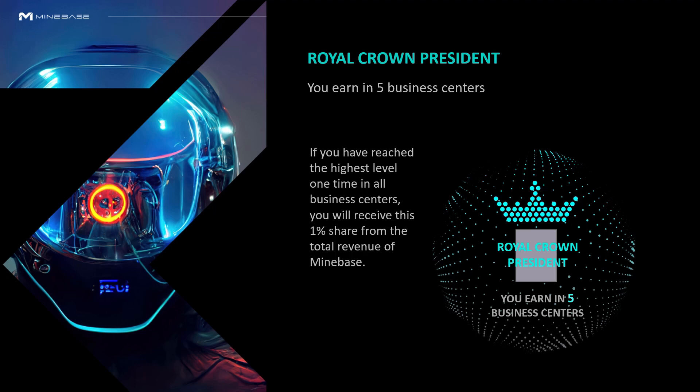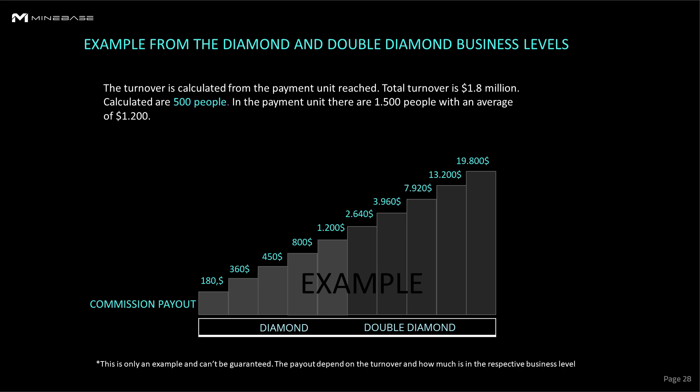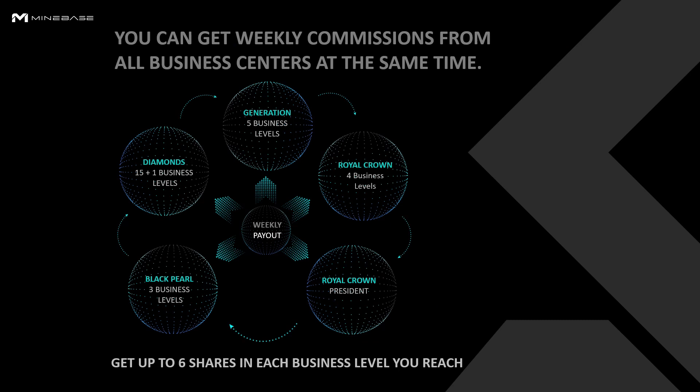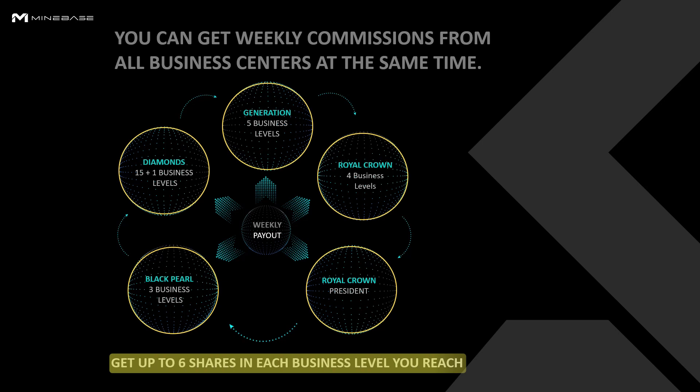Let's see how it looks in the first two Diamond levels and what you could earn there. Here is an example — note that this commission depends on how many partners are in which level. You can get a weekly commission from all business centers at the same time, and get up to 6 shares in each business level you reach.